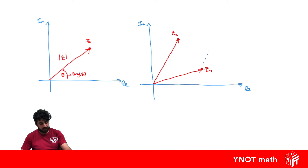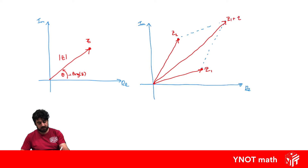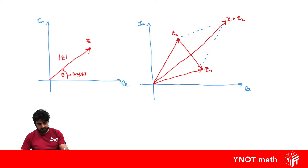We can imagine an identical z2 here and an identical z1 here, and the parallelogram that forms has its diagonal equivalent to the vector z1 plus z2. The diagonal going from z2 to z1 gives us the vector z2 minus z1, and the vector going from z1 to z2 gives us z1 minus z2.